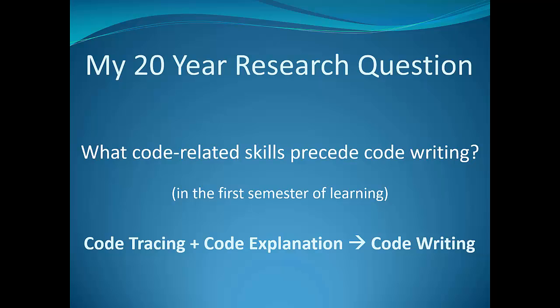The other skill, code explanation, is a question where you present the student with a piece of code and you say to them what does this code do. You're not looking for a line-by-line explanation, just a summary of the overall purpose. If students have those two skills at the end of the first semester, it seems they can write code of similar complexity.